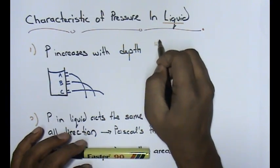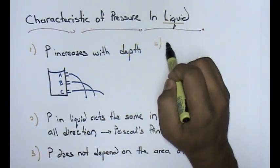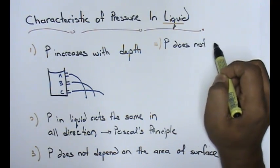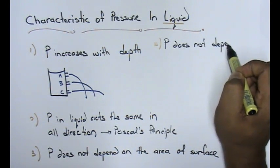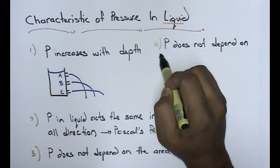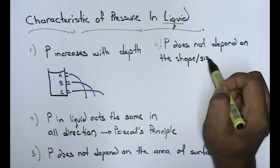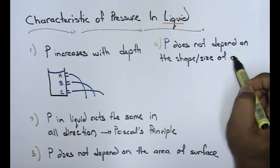Golden rule number four. Pressure does not depend on the shape or size of container.